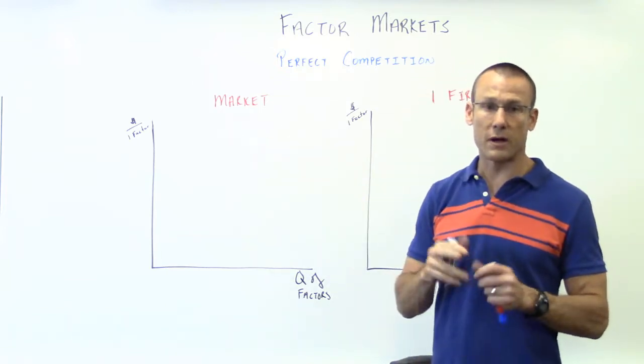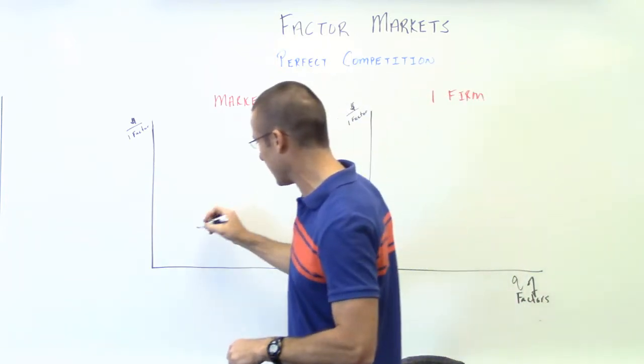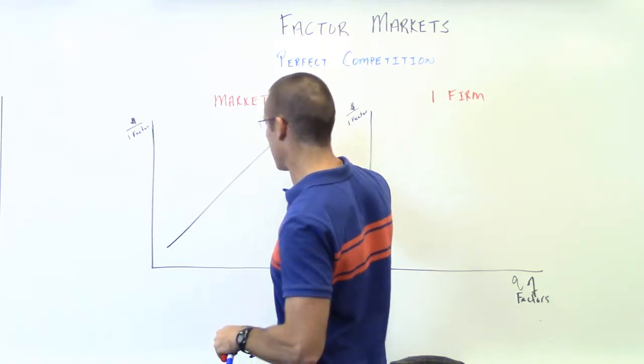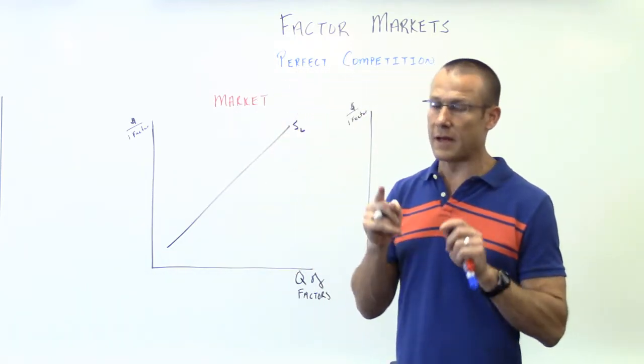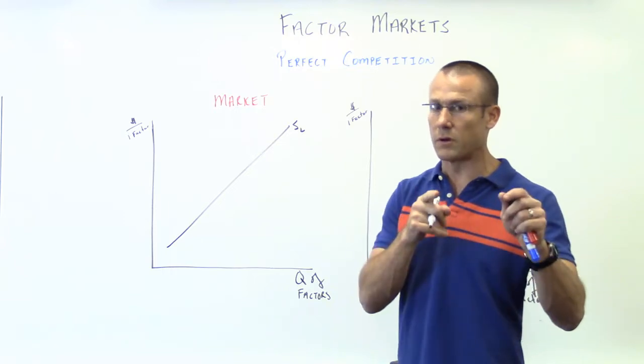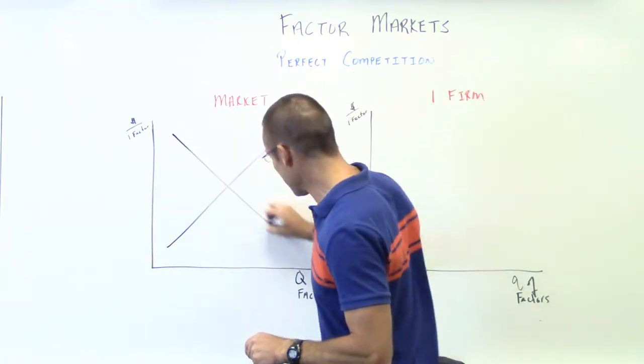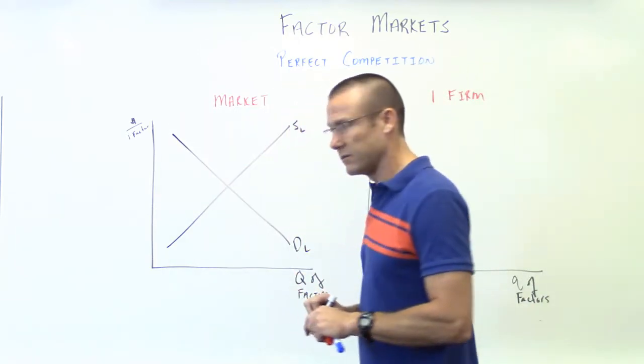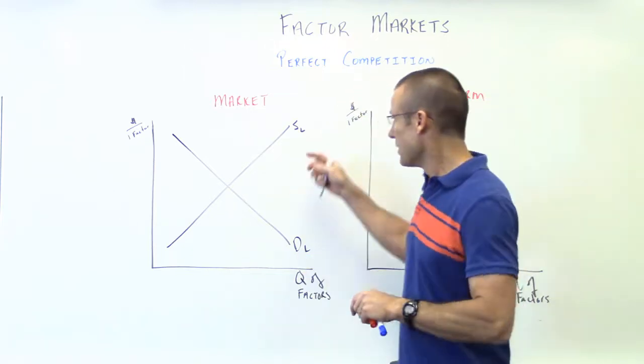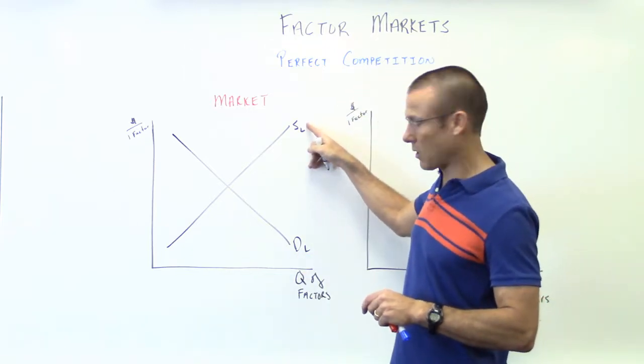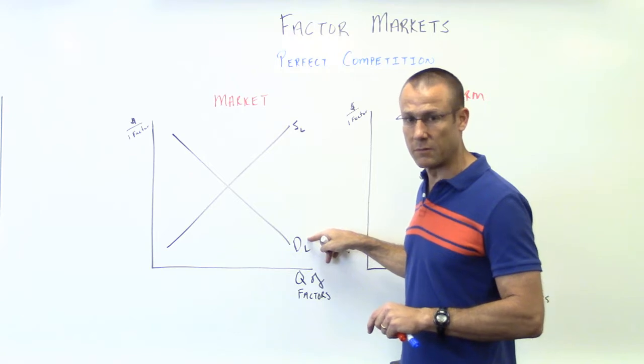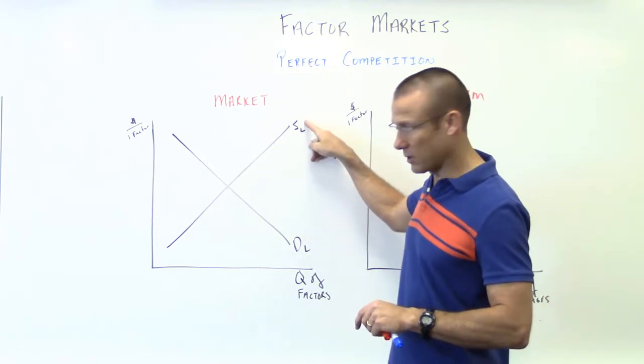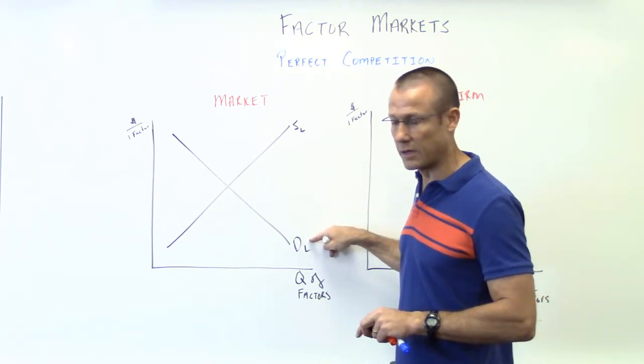So as far as supply and demand goes, pretty simple. Supply of labor. Just remember that the supplier of labor, that's the household. The demander of labor is the business. So there's the demand for labor. This has all the laborers in the market. This has all the businesses that are hiring laborers.